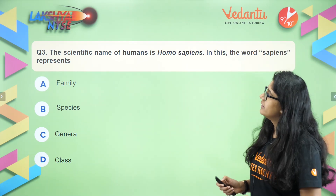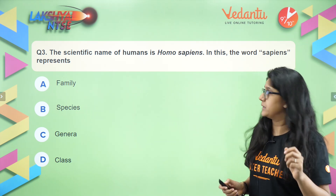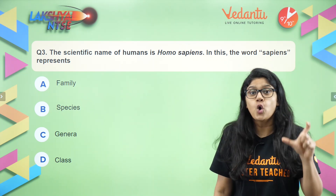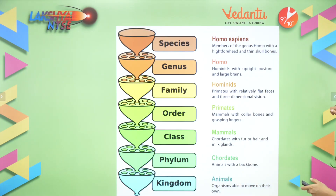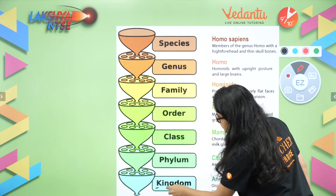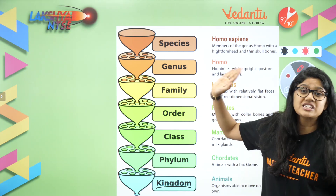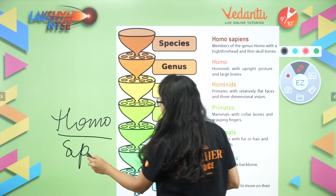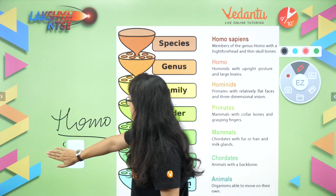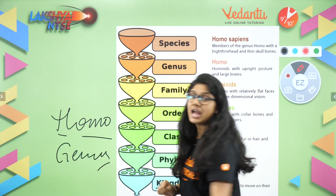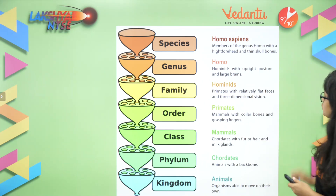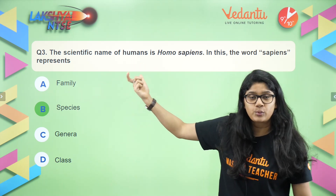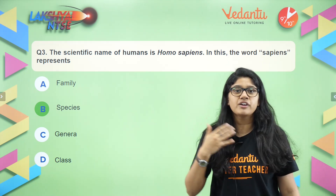The scientific name of humans is Homo sapiens. The word sapiens represents what, and the word homo represents what? We have studied that the classification goes: kingdom, phylum, class, order, family, genus, and species. So homo will be the genus and sapiens will be the species. The right answer for this question is species — homo is the genus and sapiens is the specific species name.